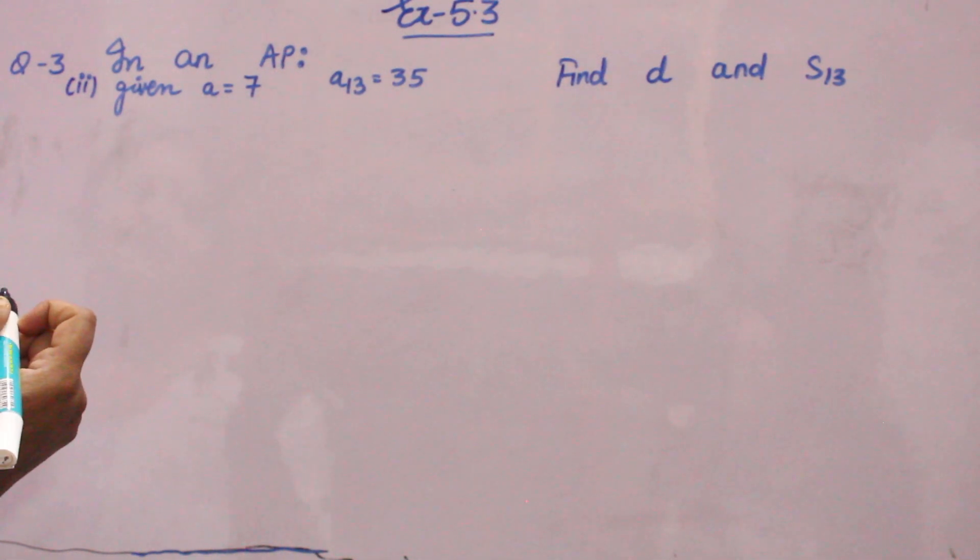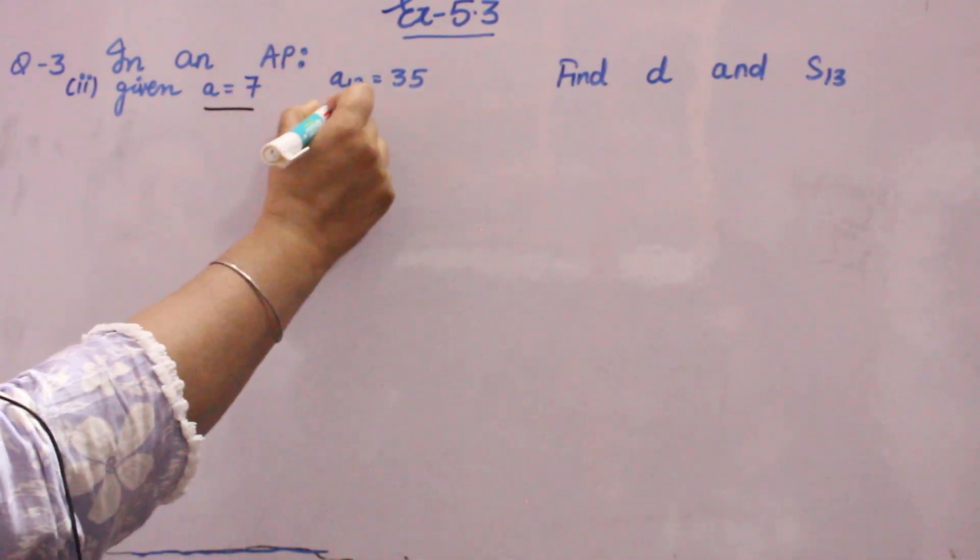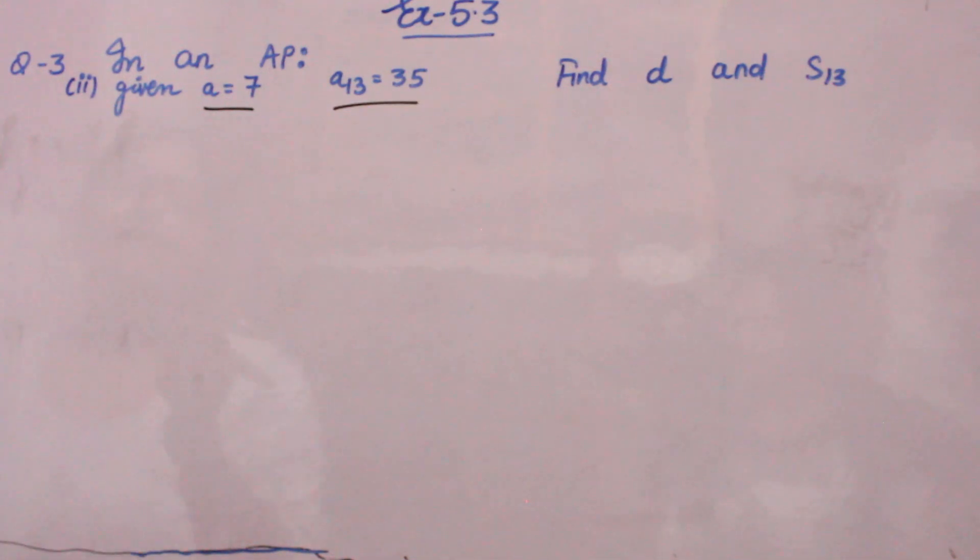In an AP, given A is equal to 7, A₁₃ is equal to 35, you have to find D and S₁₃.